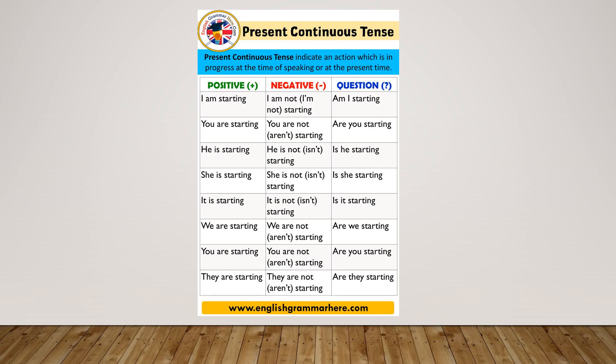Second example: 'You are starting' — the negative is 'You are not starting.' Next, 'He is starting' is a positive sentence and its negative will be 'He is not starting.' Fourth: 'She is not starting' is the negative of 'She is starting.' Then 'It is not starting' is the negative of 'It is starting.' Finally, 'We are not starting' is the negative of 'We are starting.'